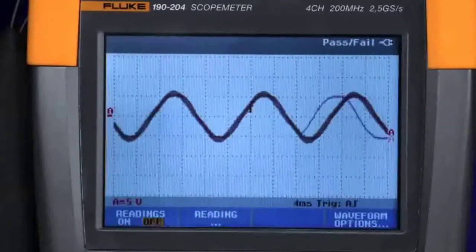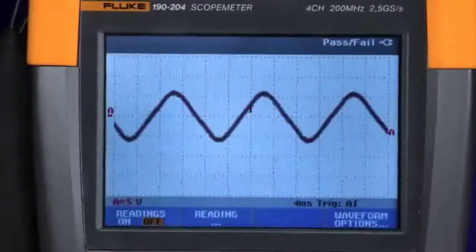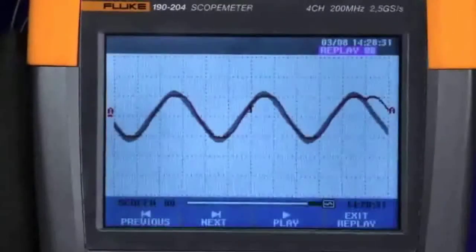When you return to the scope meter, simply go to the replay mode, access the replay memory, and you can scroll through each of the events one by one.